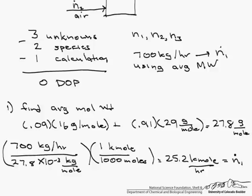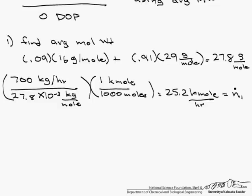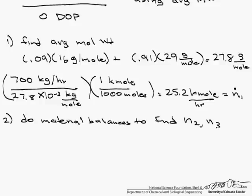Now that we have solved for N1, we can go ahead and do material balances in order to find N2 and N3. So we could do a methane and air balance. We can do an overall and methane balance. We can do an overall and air balance. Let's start by doing the overall balance, 25.2 plus N2 equals N3.